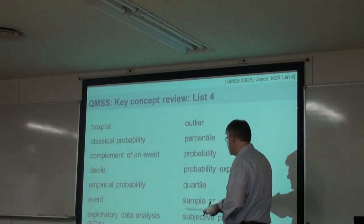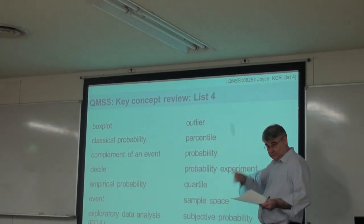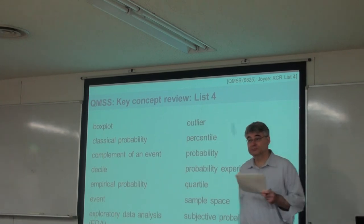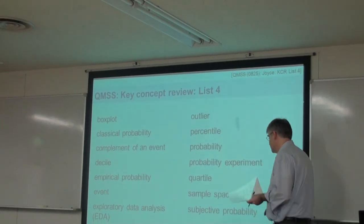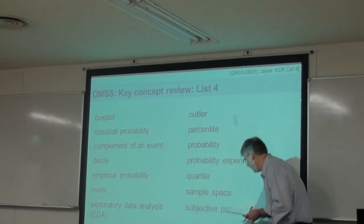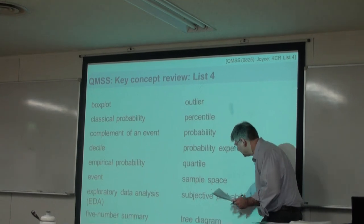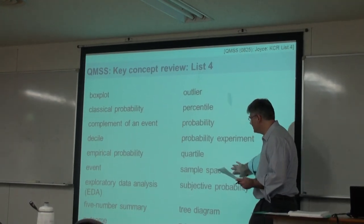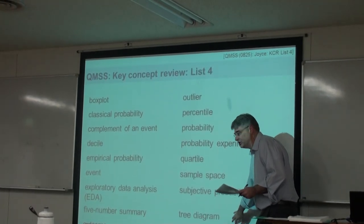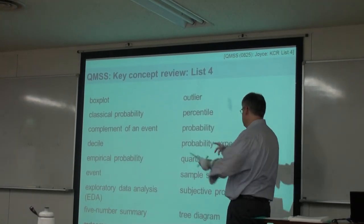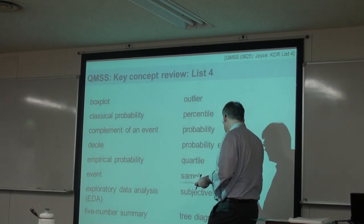Sample space — all possible outcomes, right. Another way of representing it is probably as a tree diagram, so you can see the branching of possibilities at each stage.